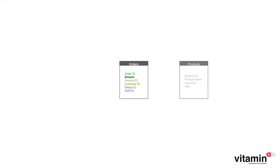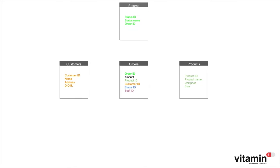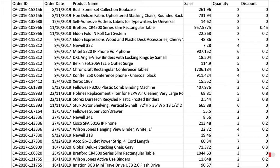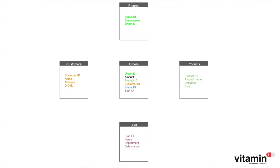A relational database is a database made up of different datasets contained in tables, because the data is in a tabular rows-and-columns format. The reason it's called relational is that every one of these tables has a relationship to one or more other tables. This relationship takes the form of one or more common data fields that contain the same information — they're called joining keys. Structuring a database like this is an efficient way of storing data and makes data analysis faster.